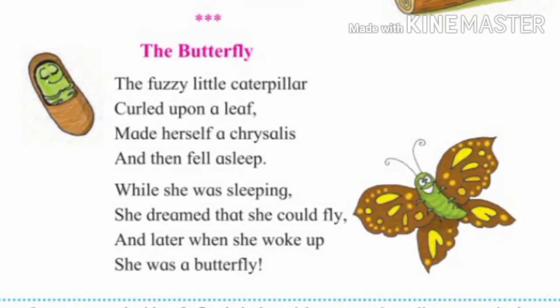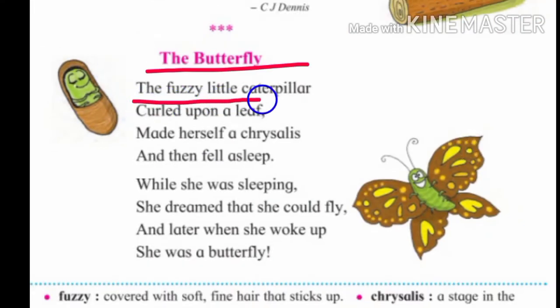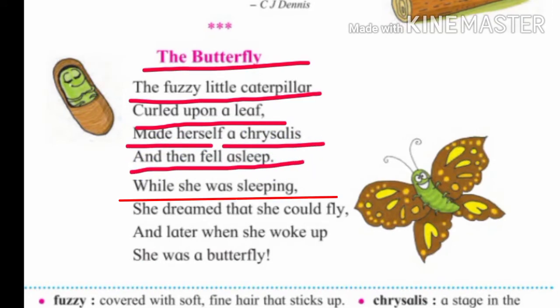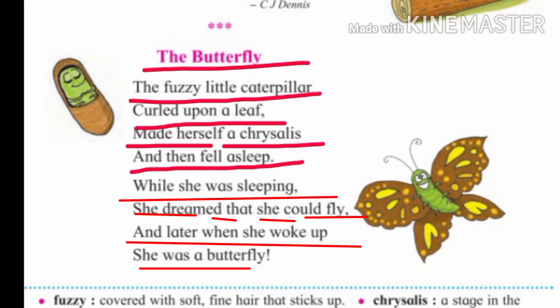The Butterfly: The fuzzy little caterpillar called upon a leaf, made herself a chrysalis and then fell asleep. While she was sleeping she dreamed that she could fly, and later when she woke up she was a butterfly.